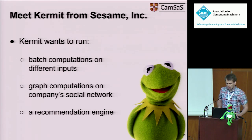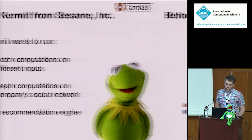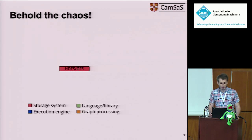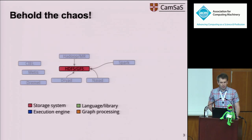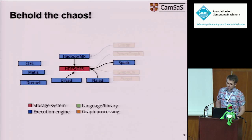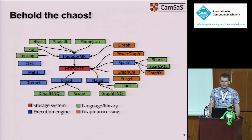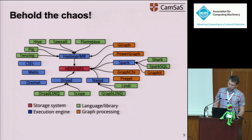The question he asked himself is what system he should use for running these tasks. He had a look at the current state of the art and found that HDFS is the de facto distributed file system. On top of it, there are many general execution engines such as Hadoop MapReduce, Spark, and Naiad. Moreover, there are several specialized graph processing frameworks like GraphG and PowerGraph, and many languages and libraries such as GraphLink and Lindy on top of Naiad, and Spark SQL and GraphX on top of Spark.